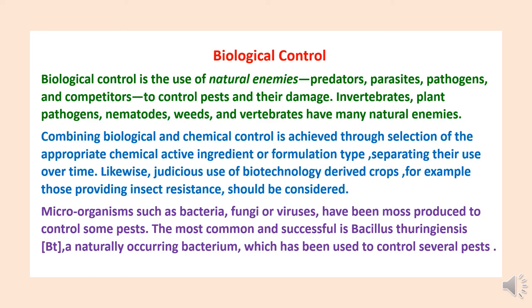Biological control is a method where natural enemies like predators, parasites, pathogens and competitors are used to control pests and their damage. There are microorganisms such as bacteria, fungi or viruses which have been mass-produced to control some pests. One successful example is Bacillus thuringiensis (Bt), a naturally occurring bacterium which has been used to control several insect pests.